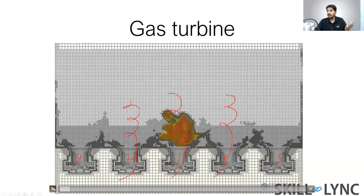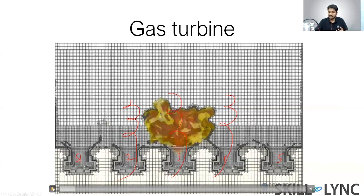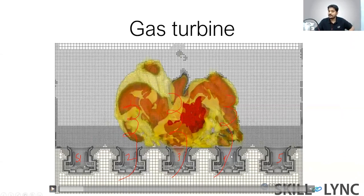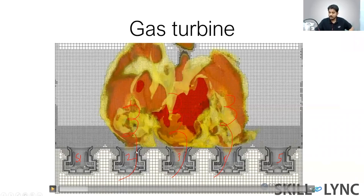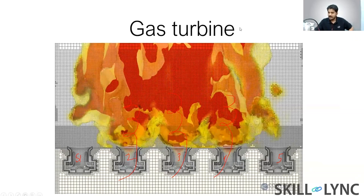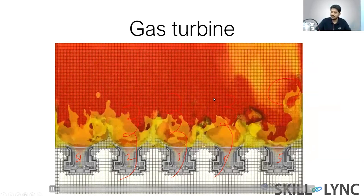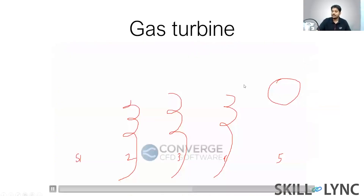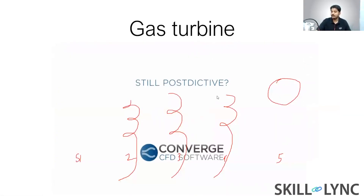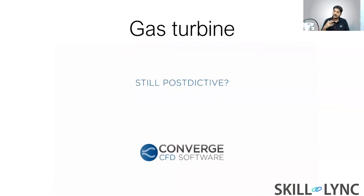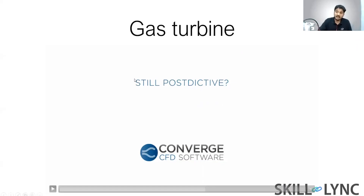We don't know which burner gets combusted next, but with CFD you can just run the simulation. The flame spreads and first burner number four gets fired, then burner number two, then you can see flame from burner number five, and then burner one starts. Everything converges to an almost uniform temperature field.